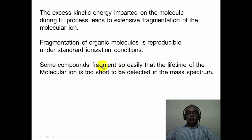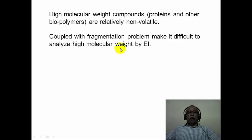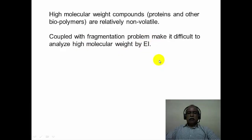Some compounds fragment so easily that their lifetime is so short the molecular ion is never detected in a mass spectrum — it is not always necessary that the mass spectrum will give information regarding the molecular weight. High molecular weight compounds such as proteins and biopolymers are relatively non-volatile, and it is difficult to prevent the molecular ion from fragmentation. This is where electrospray ionization mass spectrometry and MALDI mass spectrometry come in handy, because under those softer ionization conditions, the ions produced do not undergo extensive fragmentation.